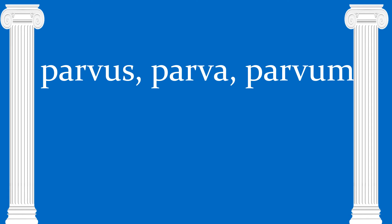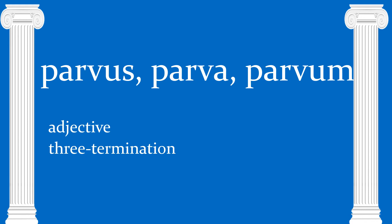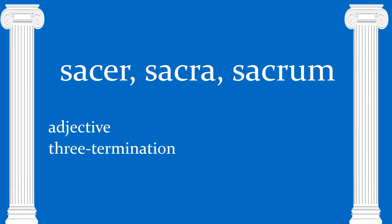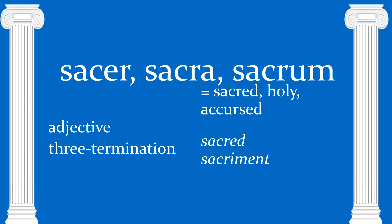Now let's take a look at some adjectives quickly. We have parvus, parva, parvum — a three-termination adjective because it has a masculine ending, a feminine, and a neuter one. It means little or small. You may encounter the word parvule someday; it just means a little pill. One more adjective today: sacer, sacra, sacrum — also three-termination with three different endings, one for each gender. It means sacred, holy, or interestingly, also accursed. We get words like sacred and sacrament from this.